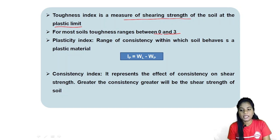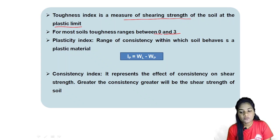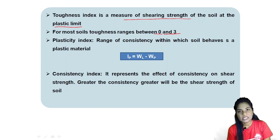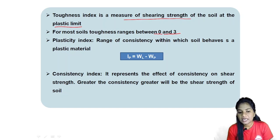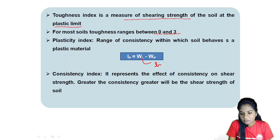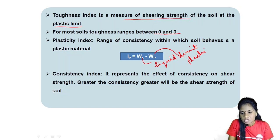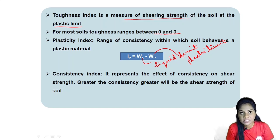The plasticity index is the range of consistency within which soil behaves as a plastic material — specifically, the range of water content. For each soil, IP is equal to WL minus WP, where WL is the liquid limit and WP is the plastic limit. This range of water content over which the soil exhibits plastic material behavior is the plasticity index.